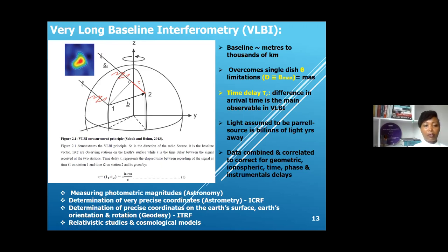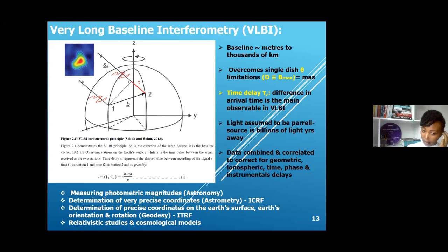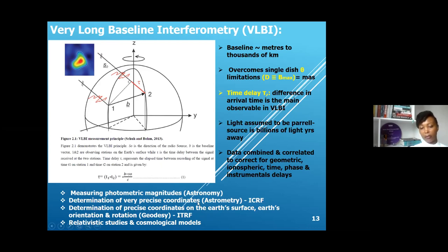Some of the applications of VLBI in astronomy: it's used for measuring flux density of sources, for determining very precise coordinates — that is astrometric VLBI — which is important in the maintenance of the International Celestial Reference Frame, ICRF. The ICRF is very important for navigation, used in the maintenance of GPS. VLBI is also used in relativistic studies and cosmological models of the universe.